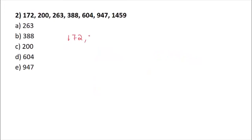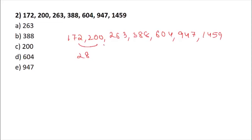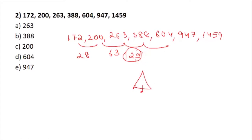Question 2: the series is 172, 200, 263, 388, 604, 947, 1459. The difference between the first two numbers is 28, the next difference is 63. Looking at the next difference - 125 - a bell should ring in your head: that is the cube of 5. This is why I told you to remember cubes from 1 to 15. Following this rule further, the next difference is 6³ = 216.